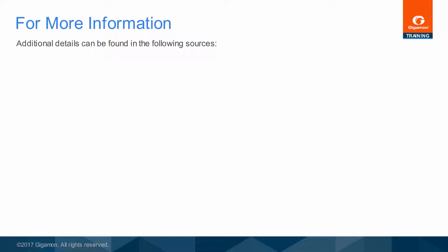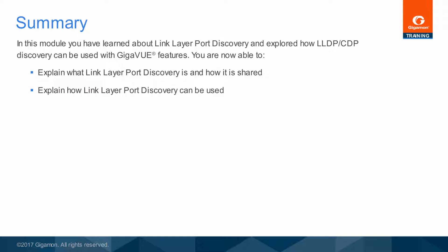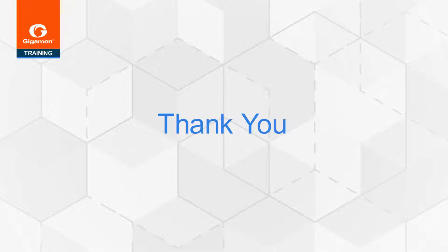Additional details about link layer port discovery can be found in the LLDP CDP port discovery configuration training module, in the HVUE web interface online help topics, and in the user guides. In this module, you have learned about link layer port discovery and explored how LLDP and CDP discovery can be used with GigaView features. You are now able to explain what link layer port discovery is, how the resulting information is shared, how it can be used, and describe GigaView H-Series support for link layer port discovery.